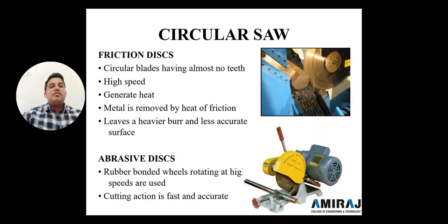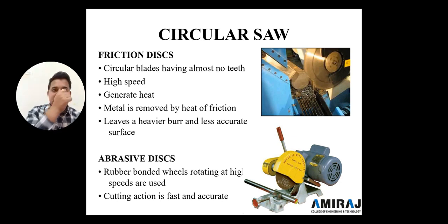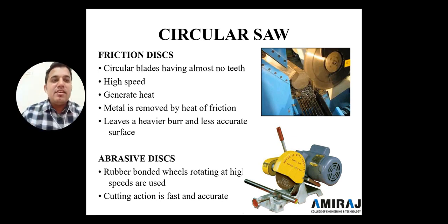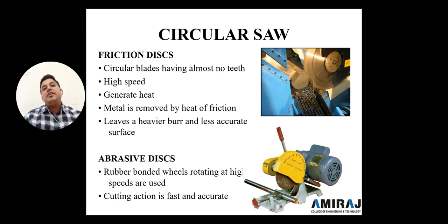The second type is the friction disc, and the third is the abrasive disc. The friction disc is a circular blade having almost no teeth — it has a knife edge. It is a high-speed device that generates heat; the metal is removed by the heat of friction, leaving a heavy burr and less accurate surface.